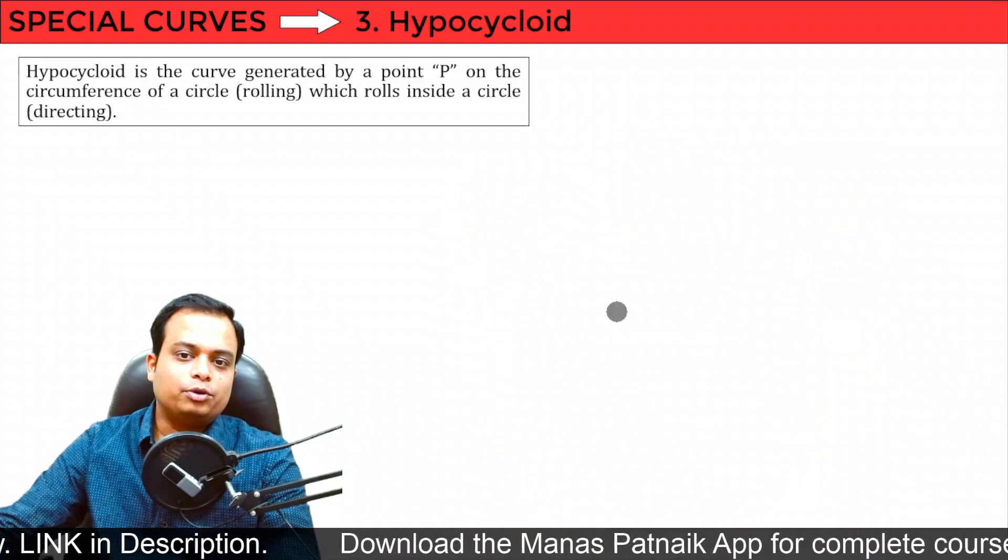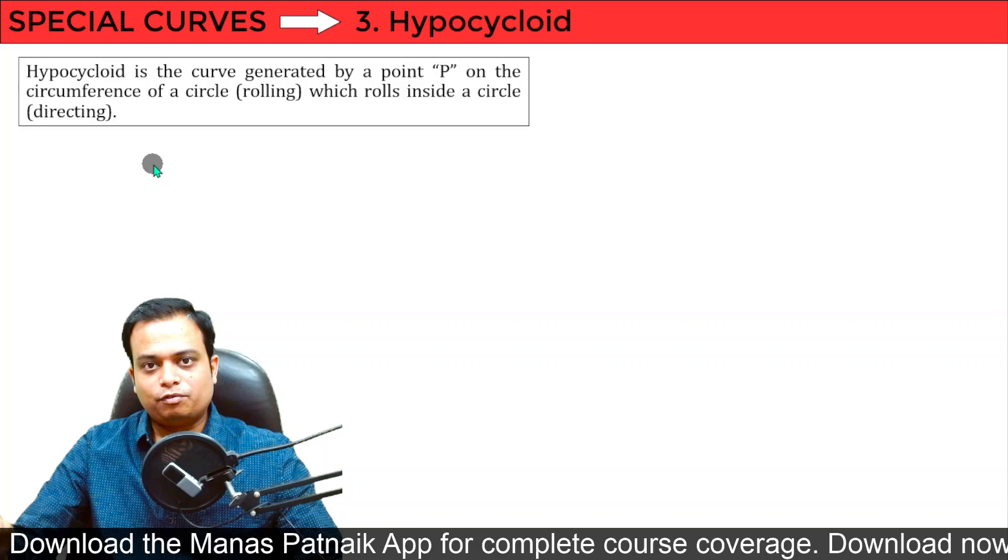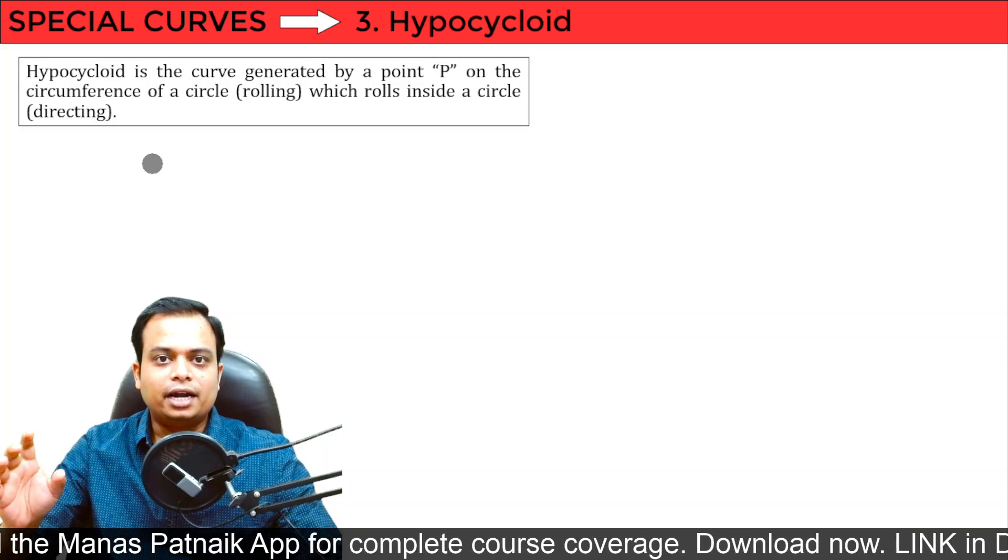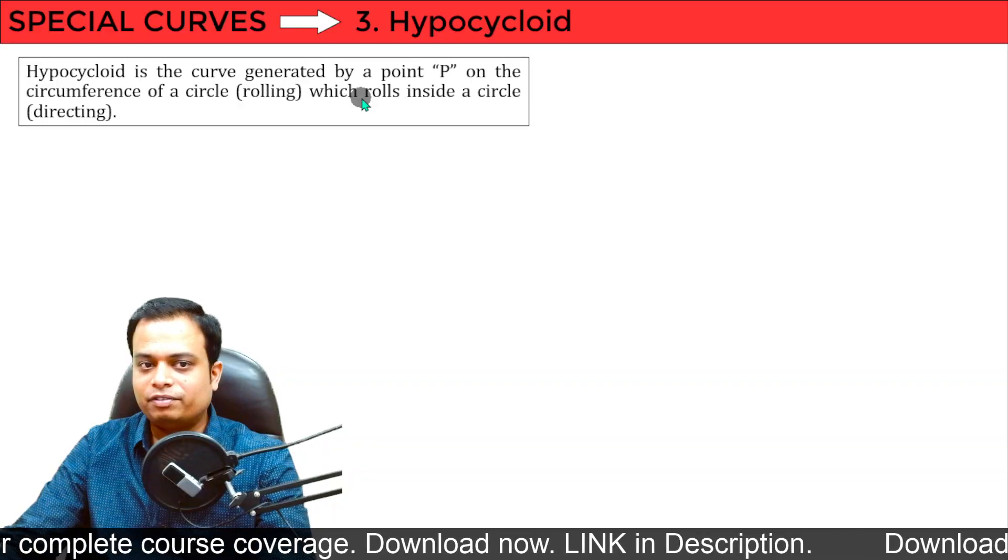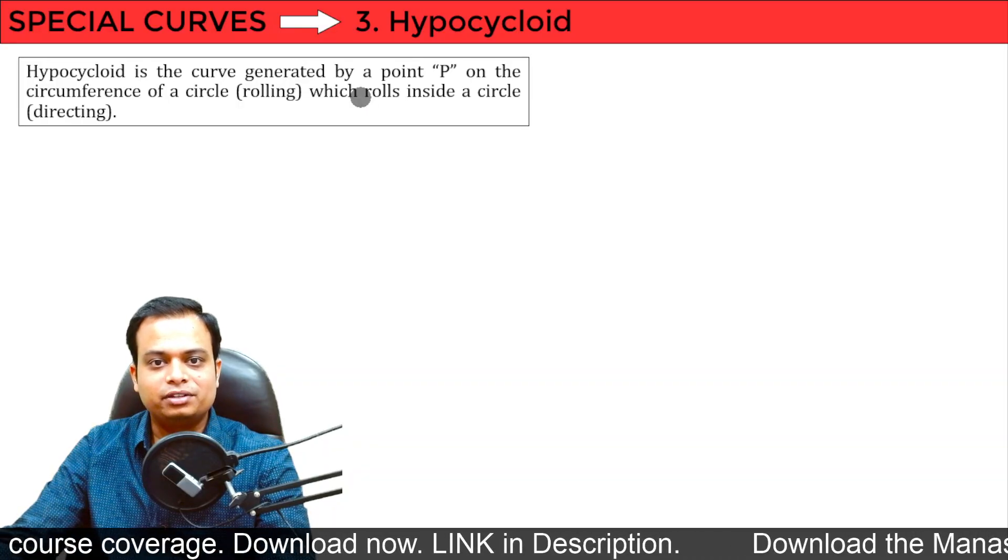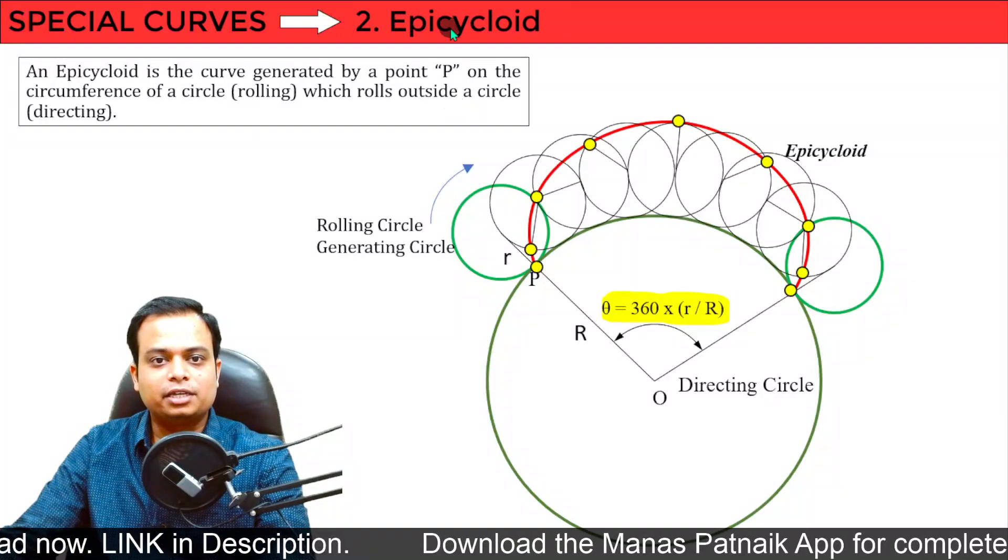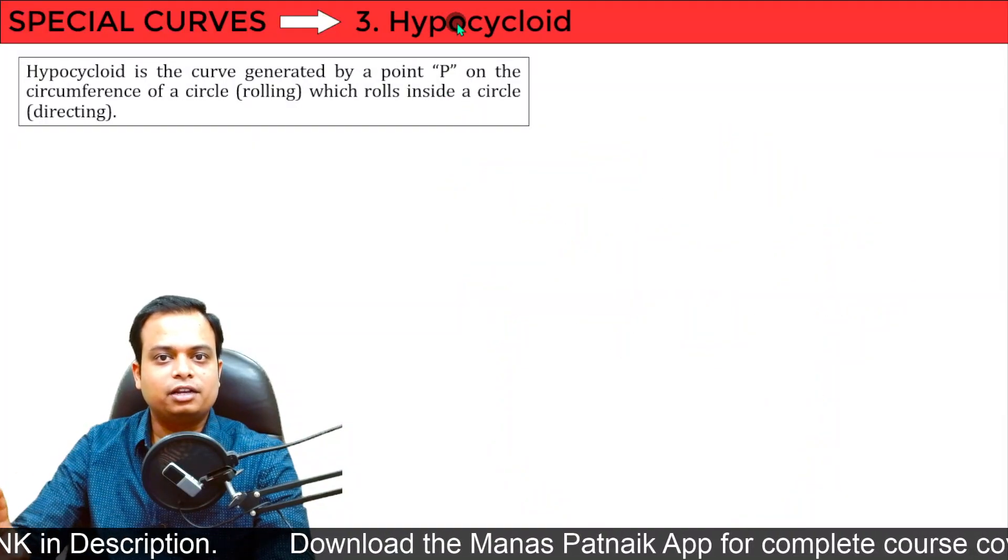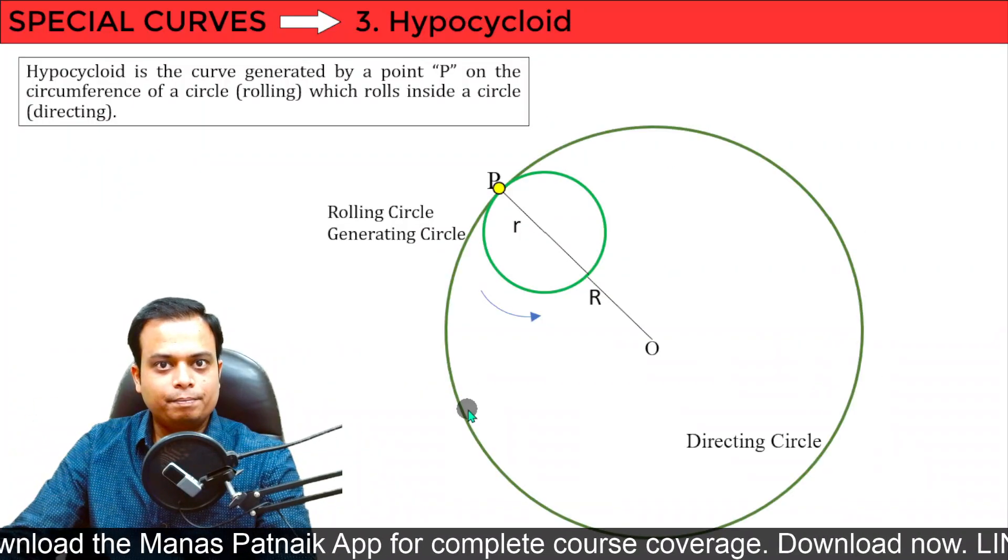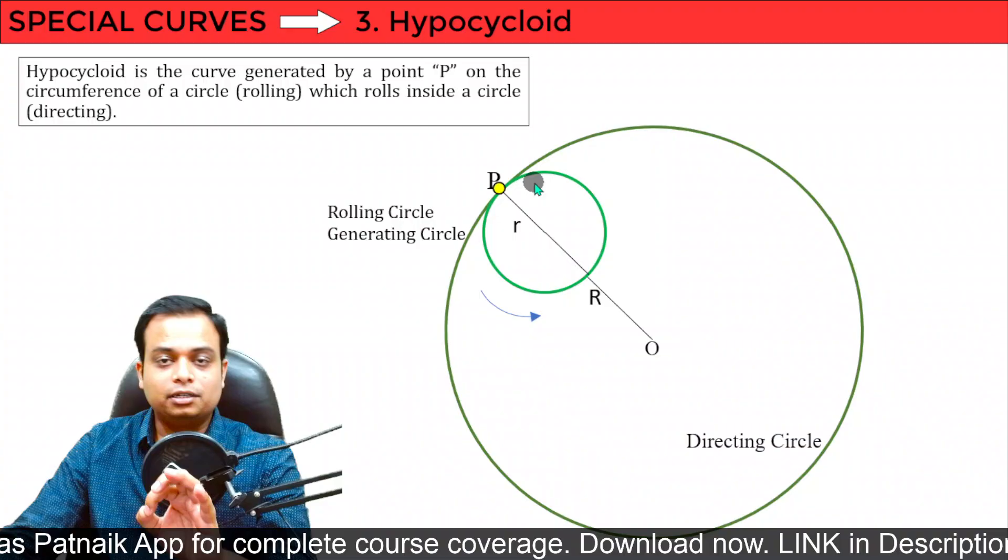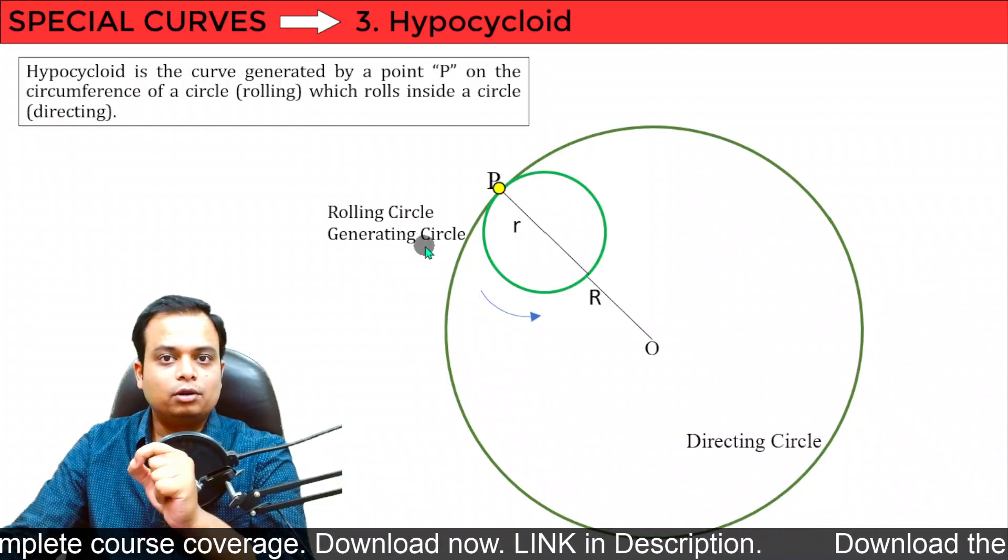Third curve is going to be hypocycloid. Again, a very interesting one, the difference from epicycloid being that it is going to roll inside the directing circle. Let's see. Remember, the definition is completely same, but the only difference is it rolls inside. And here, it was rolling outside. Inside, outside, epicycloid, inside, hypocycloid. That's the difference. Let's have the circles. One of them is fixed, the bigger one. The name is directing circle. While the other circle, which is going to roll, that too inside, is the rolling circle or the generating circle. Let's take a look. What happens when it starts rolling?